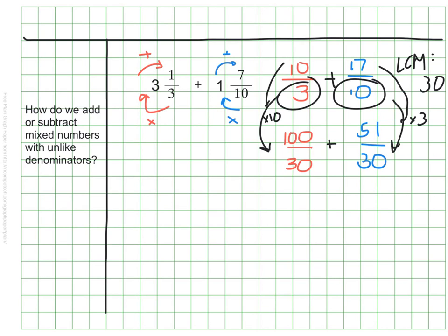Now that they have equivalent or common denominators, we can go ahead and add the numerators. My total is 151 over 30, but as we know, we can turn this back into a mixed number.